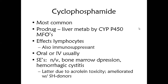This prodrug gets activated with the help of the cytochrome P450 enzyme, which is a mixed function oxidase enzyme. It affects lymphocytes, which is why it causes immunosuppression. It is given by IV or oral. Important side effects include nausea, vomiting, bone marrow depression, and hemorrhagic cystitis — this last one being the classical and very typical side effect of cyclophosphamide.